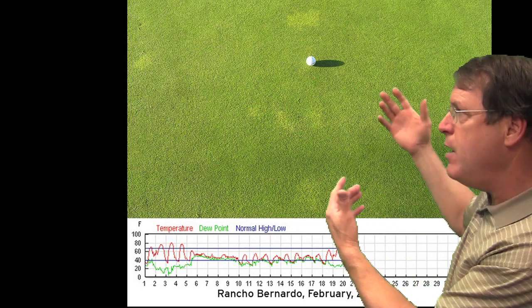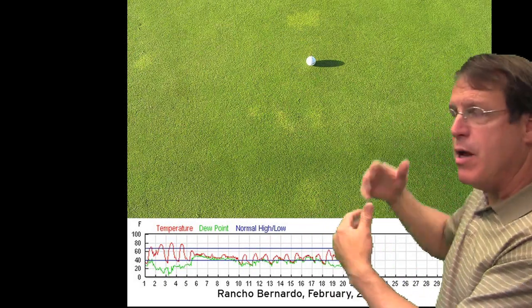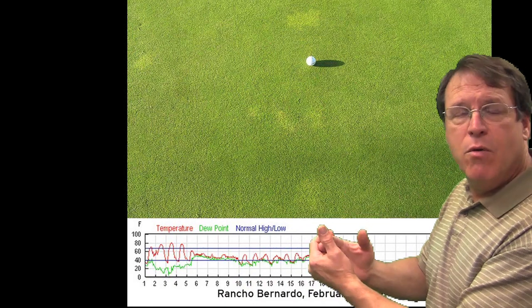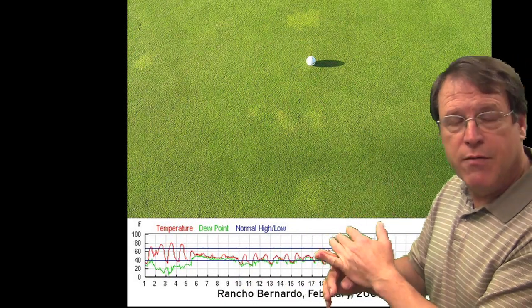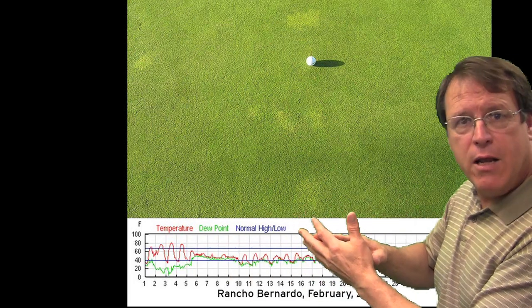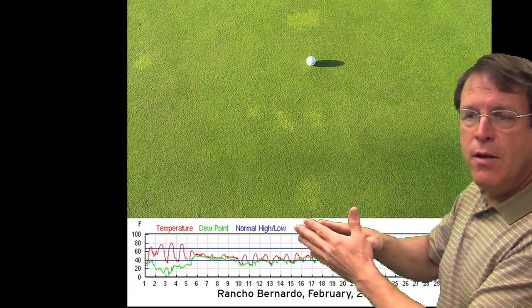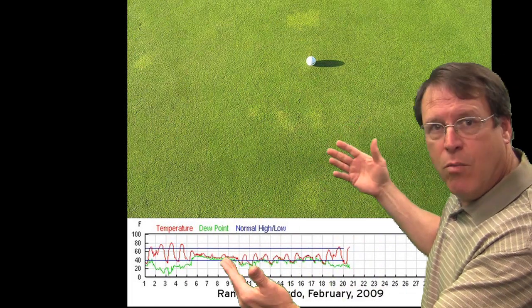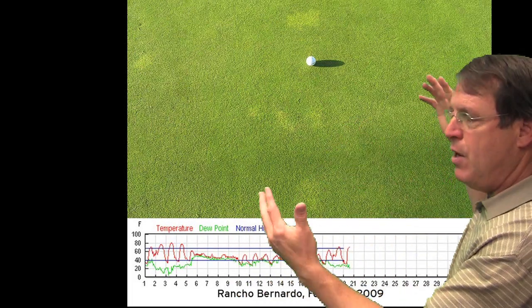In the Poa annua, in any one green there's about 26 different biotypes, which can mean that they have different numbers of chromosomes. It could be the reptans variety of Poa annua, or the Poa annua annual, the annual biotype of Poa. It's a highly variable organism.